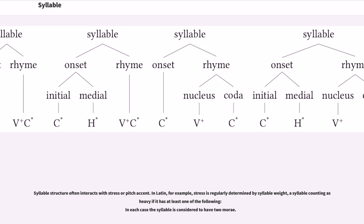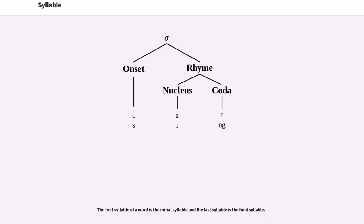Syllable structure often interacts with stress or pitch accent. In Latin, for example, stress is regularly determined by syllable weight, a syllable counting as heavy if it has at least one of certain features, in each case the syllable is considered to have two morae. The first syllable of a word is the initial syllable and the last syllable is the final syllable.